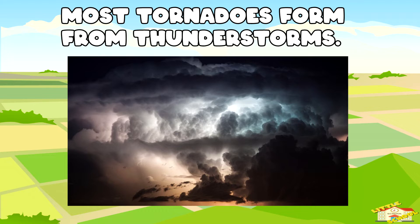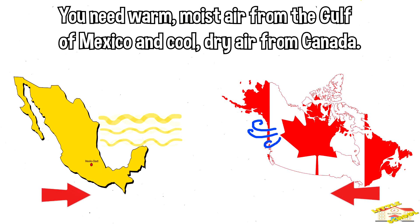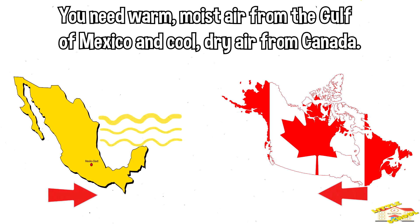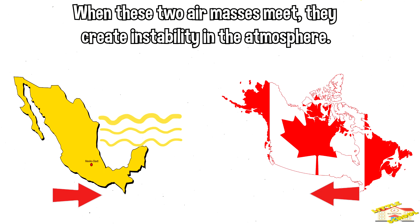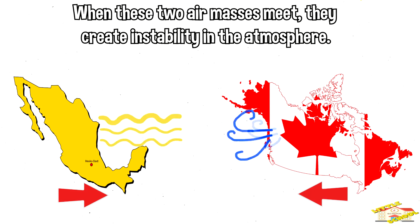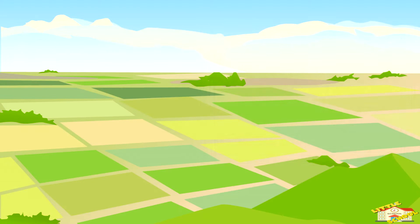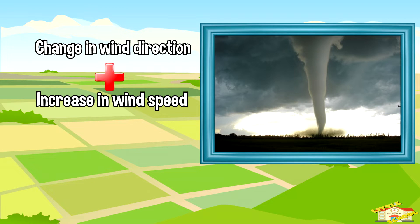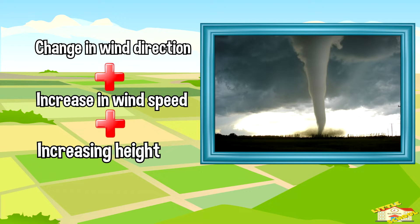Most tornadoes form from thunderstorms. You need warm moist air from the Gulf of Mexico and cool dry air from Canada. When these two air masses meet, they create instability in the atmosphere. A change in wind direction and an increase in wind speed with increasing height creates an invisible horizontal spinning effect in the lower atmosphere.